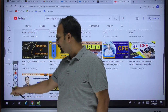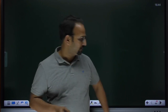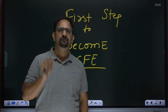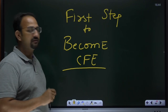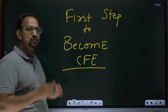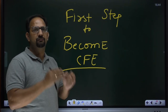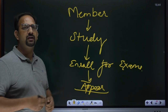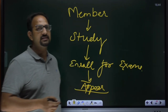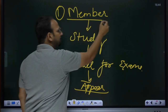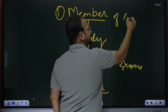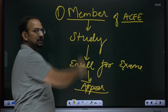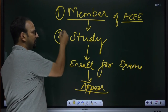Now without taking much time, let me discuss how to register into the CFE course. To become a CFE, the first step is to become a member — a member of ACFE, the Association of Certified Fraud Examiners. That is the first step. Second, you have to study and prepare for the exam.